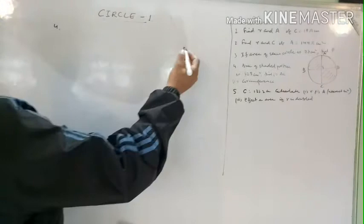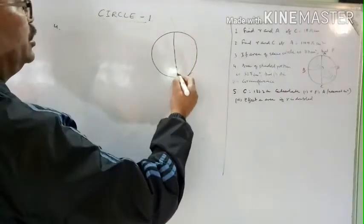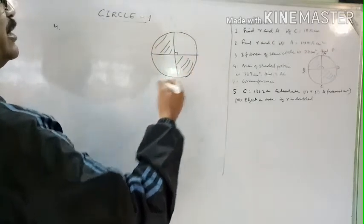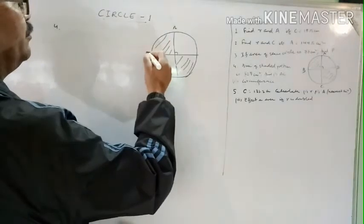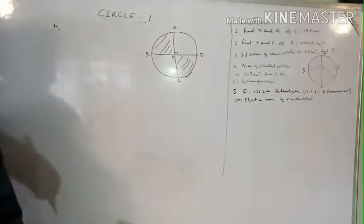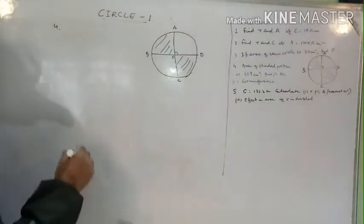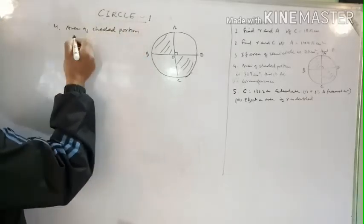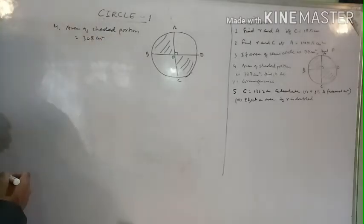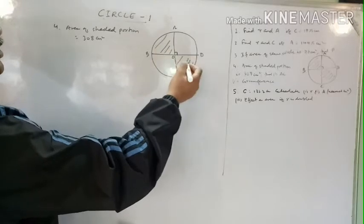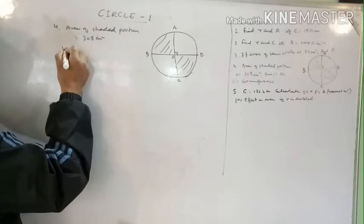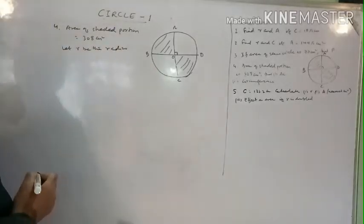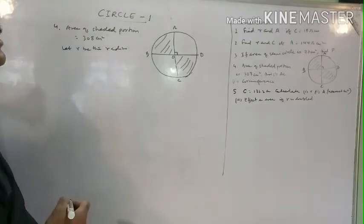Question four: a diagram shows two diameters intersecting at right angles in a circle, creating four quadrants. Points are labeled A, B, C, D. The two shaded regions are alternate quadrants. The area of the shaded portion is 308 cm². We need to find the perimeter of the shaded region.